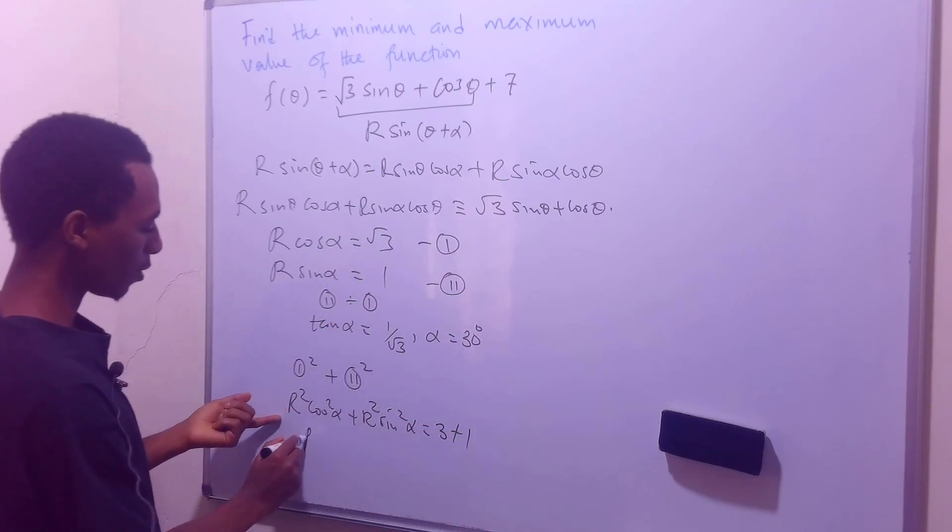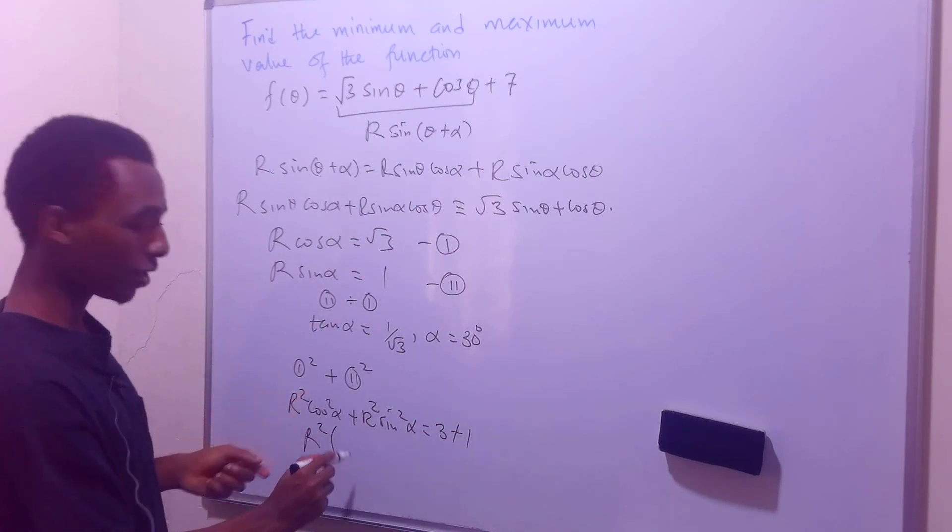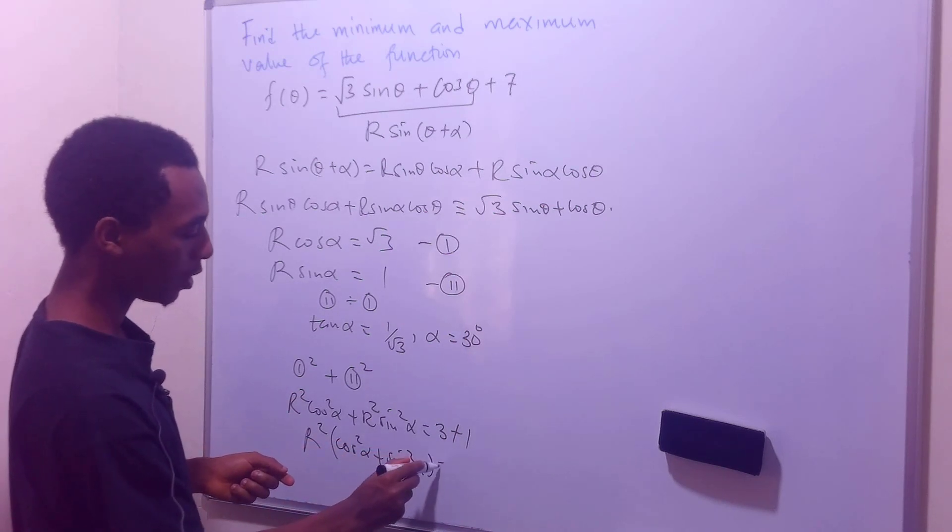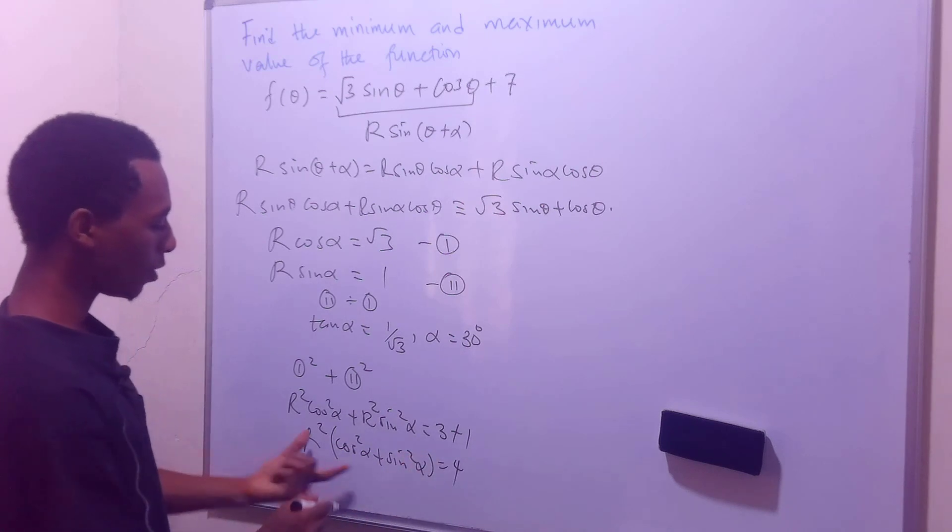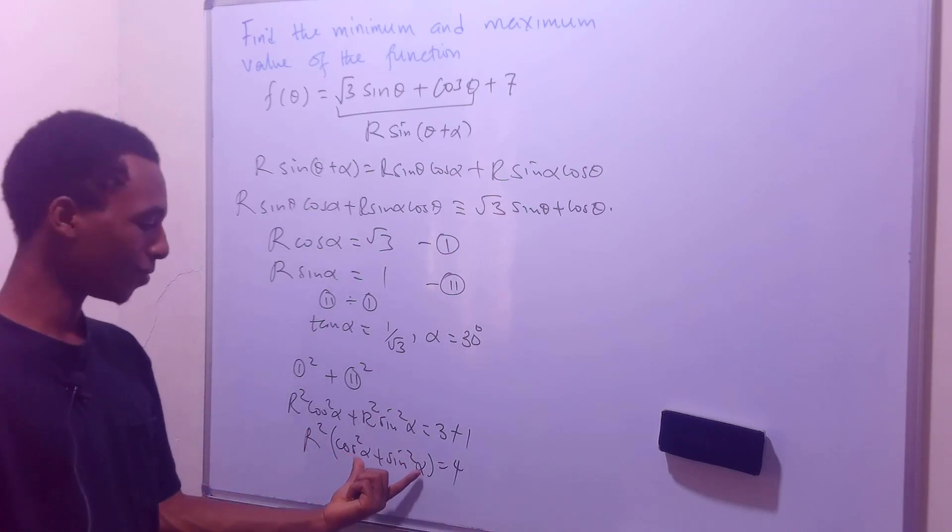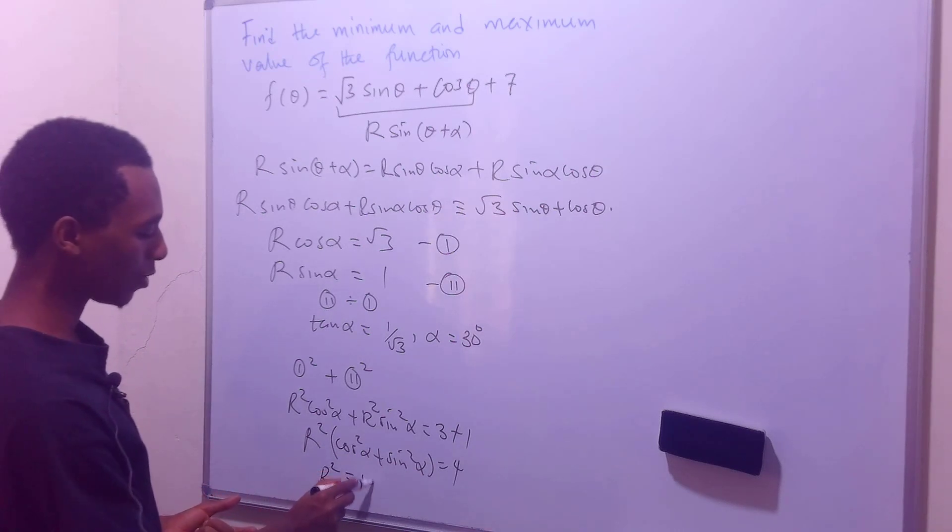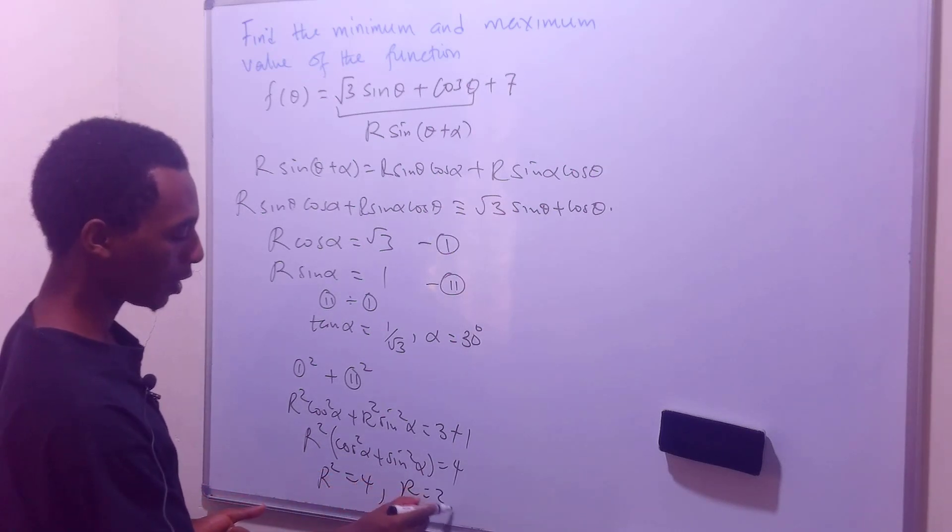So factorize out r², we'll have cos²(α) + sin²(α) = 4. Of course, this is 1. We know that from Pythagoras theorem. So r² = 4. And we'll take r as 2.